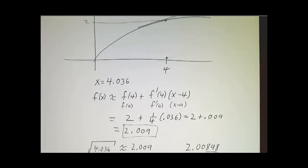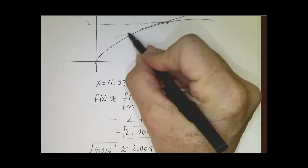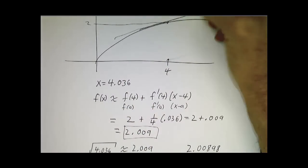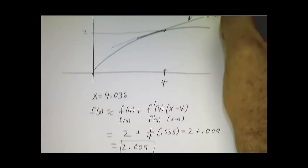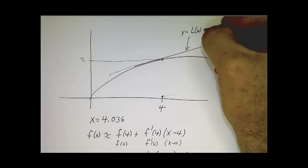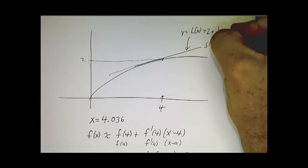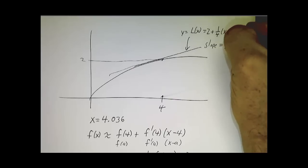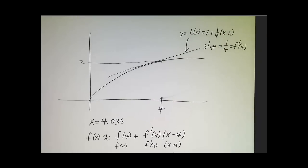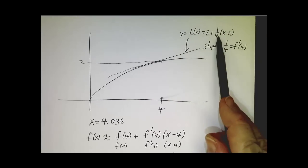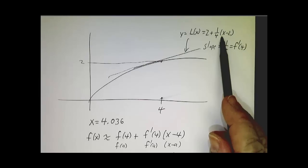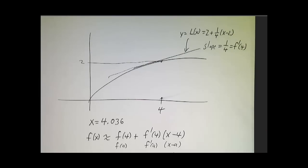Now if we go back, the equation of this line is y equals L of x, which is 2 plus one-quarter x minus 2. So you could think of it as we'll plug in x equals 4.036.